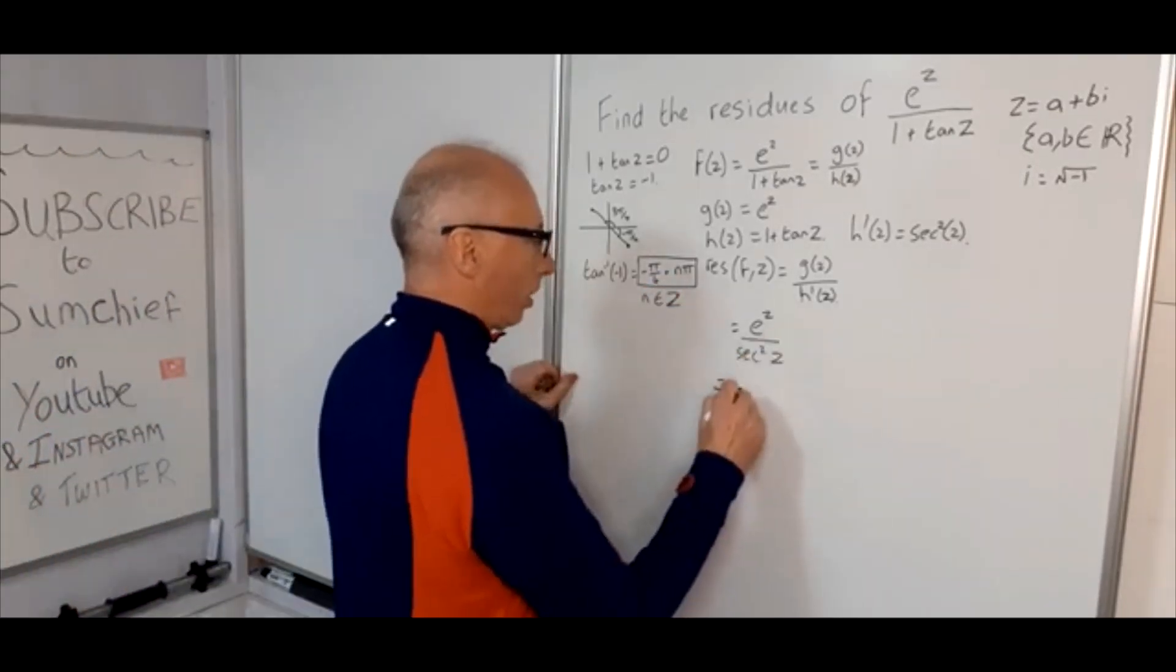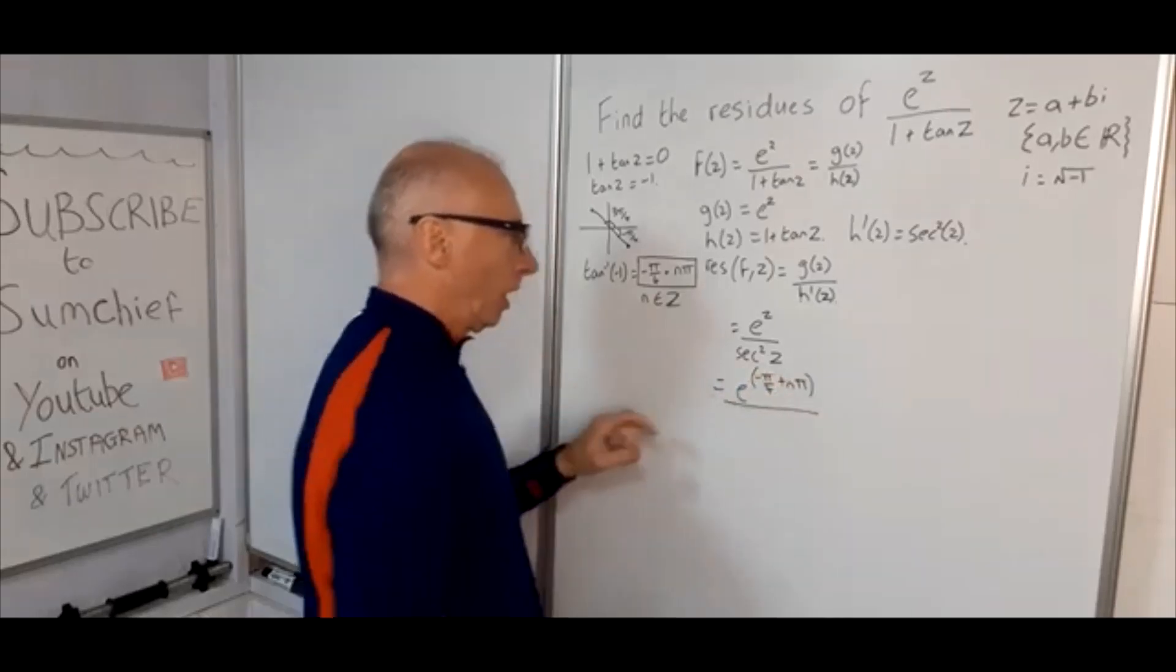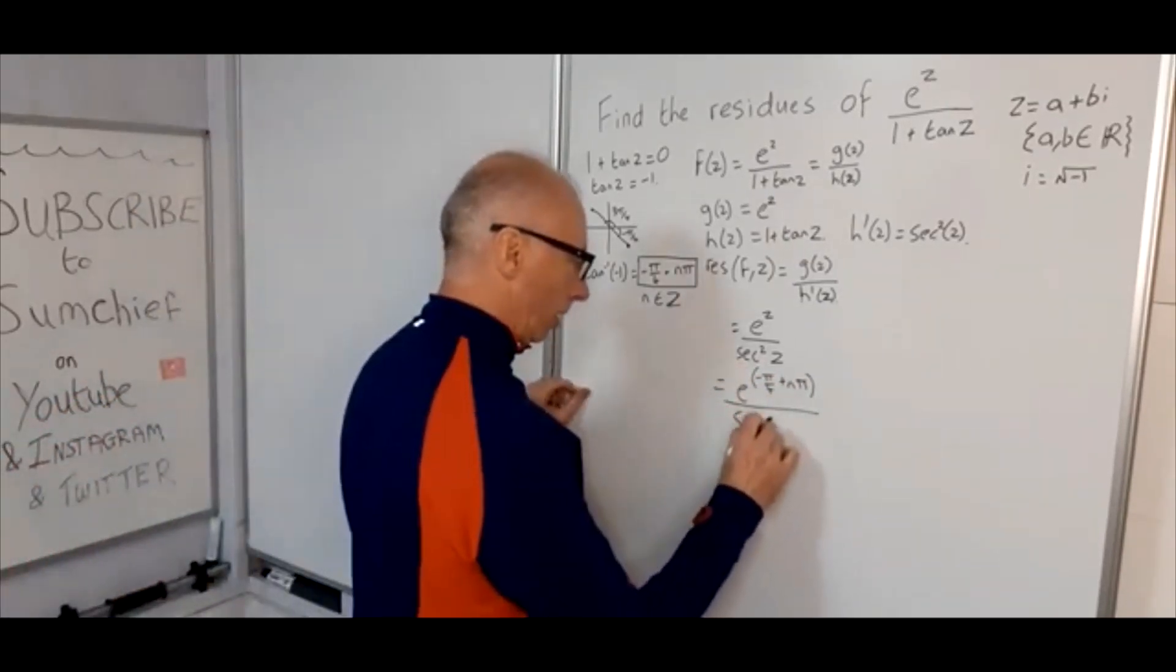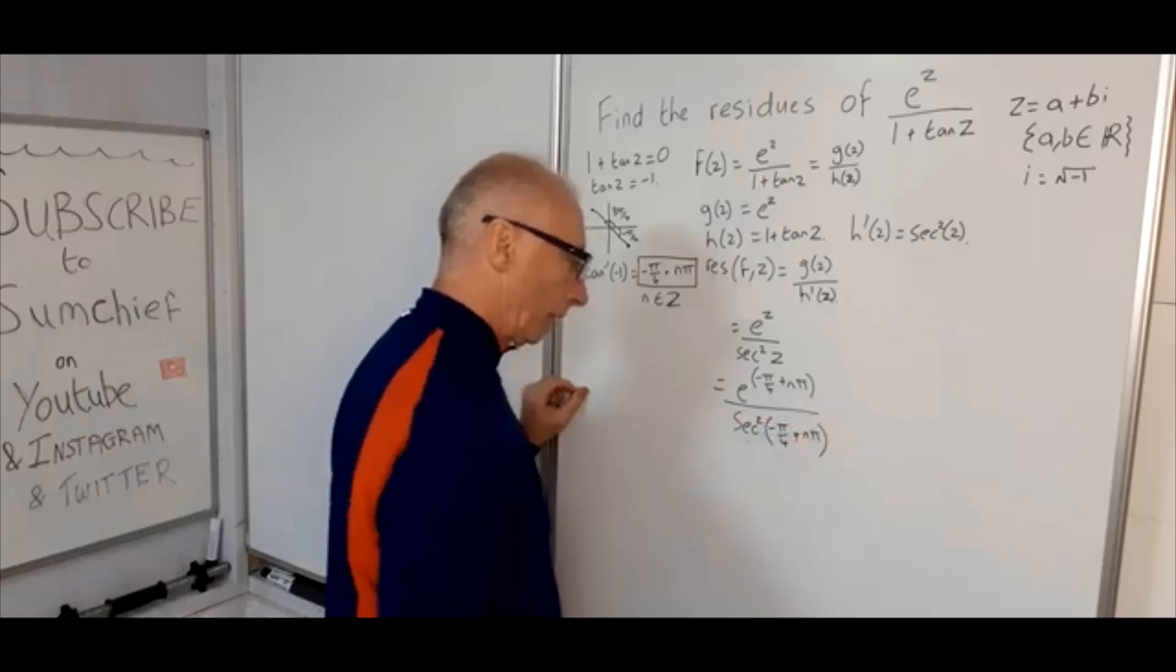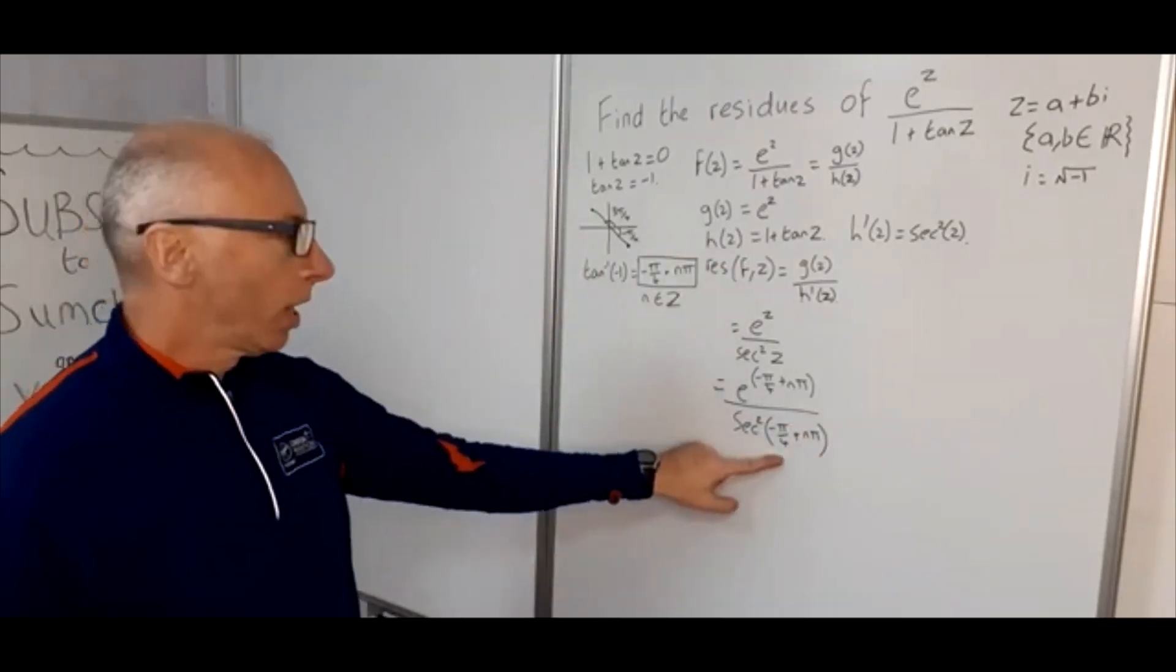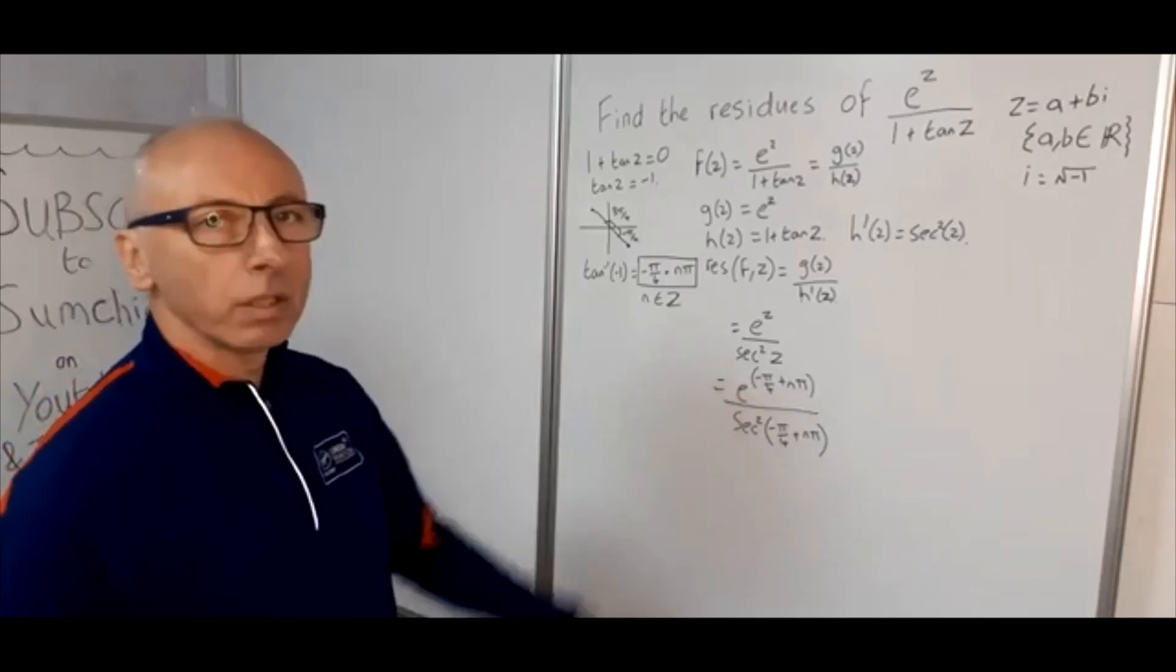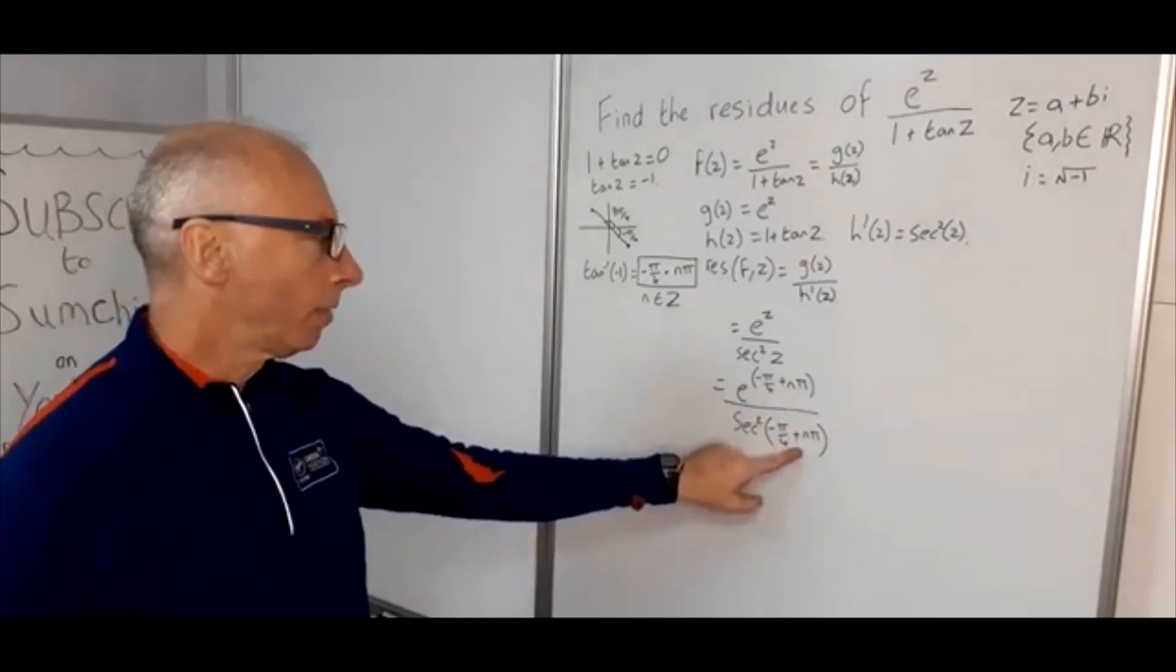So that equals e^(-π/4 + nπ). So we could end up with a load of different residues here just by virtue of these denominators and numerators having many different varieties, many different values.